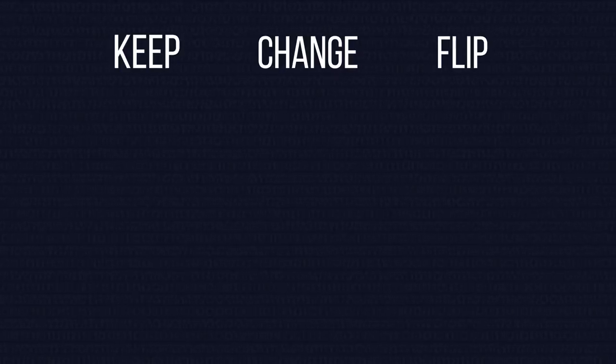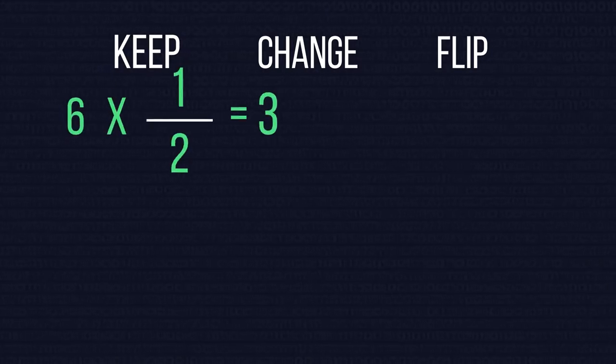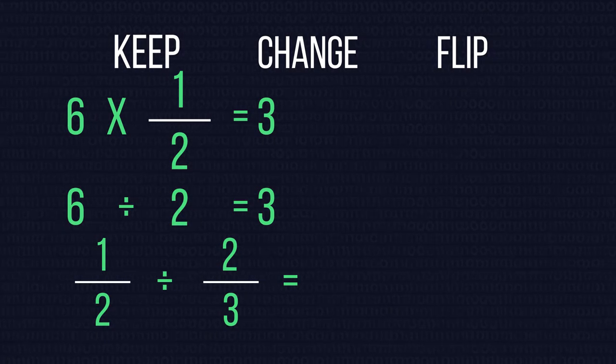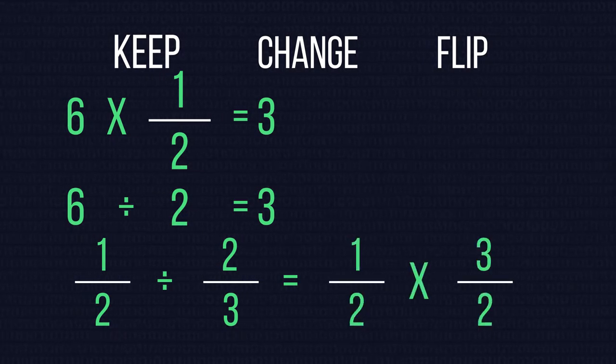This method is based on the knowledge that multiplying by 1 half is exactly the same as dividing by 2. As such dividing by 2 thirds is the same as multiplying by 3 over 2. This is because they are reciprocals or numbers that have a product of 1.